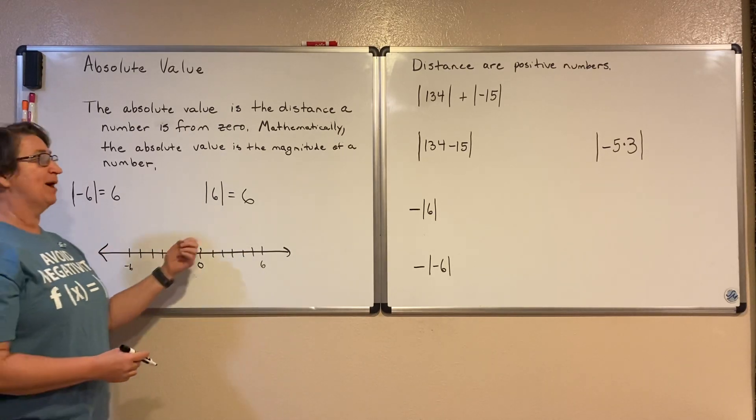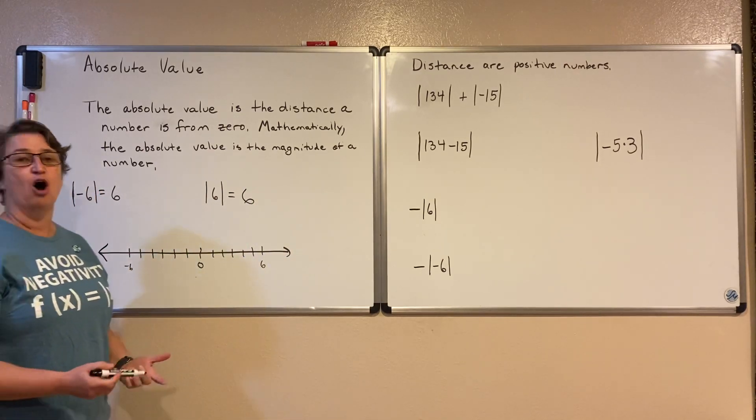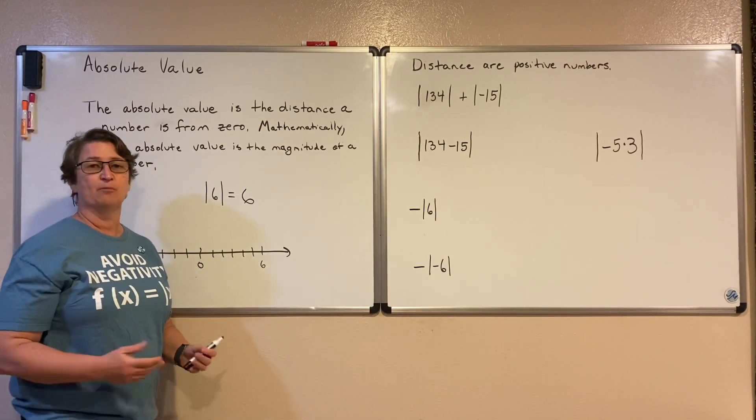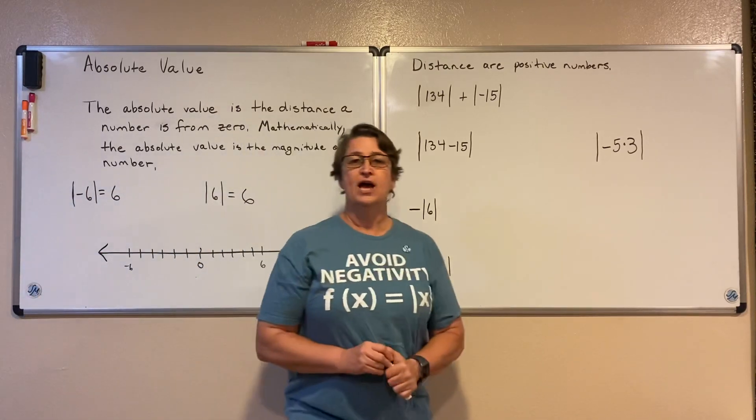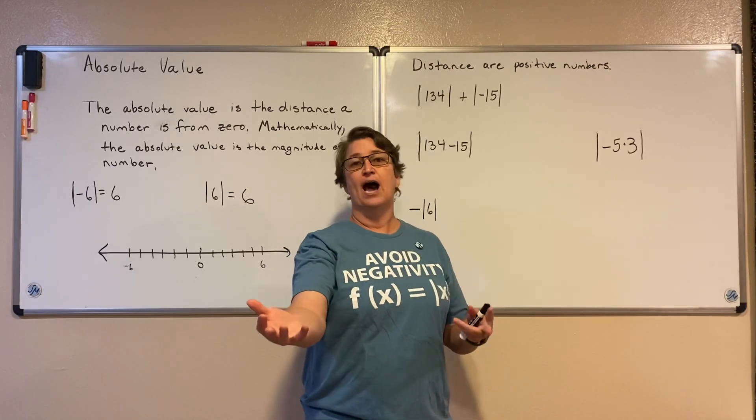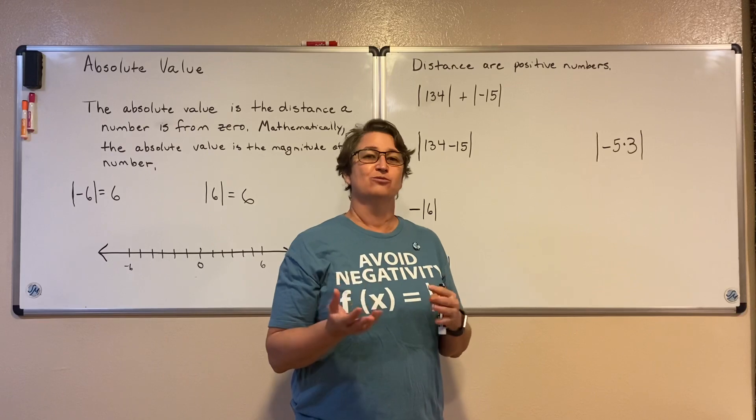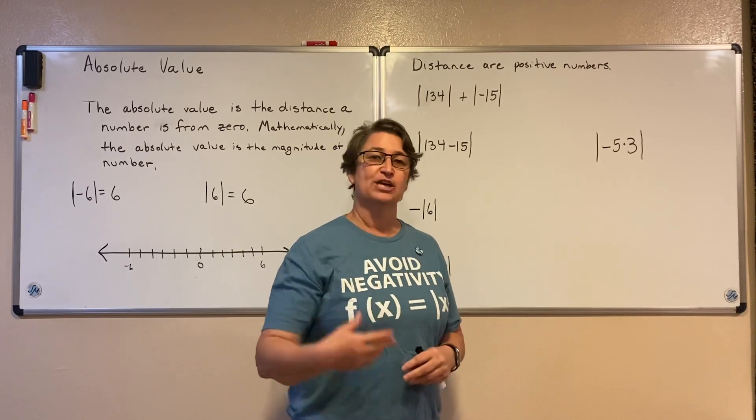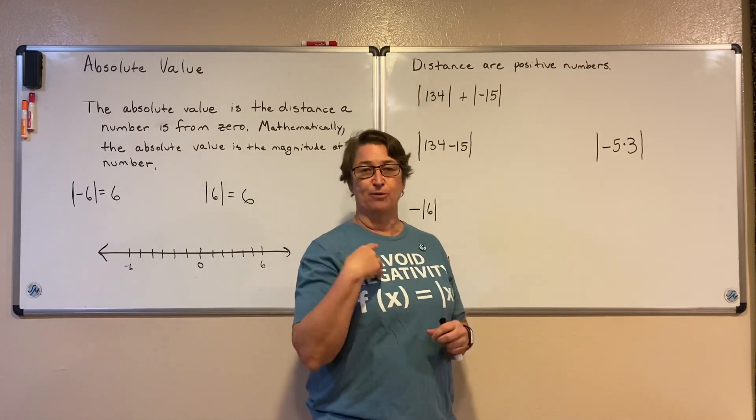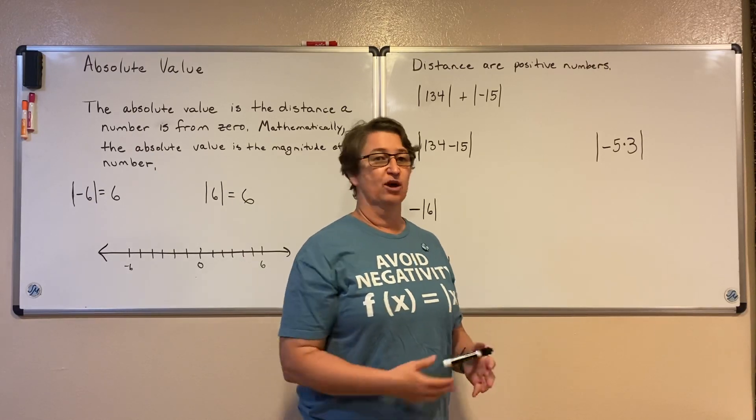If you think about it, distances, the distance to zero is always a positive number. You don't tell someone I'm going to drive 30 minutes to the closest town and then I'm going to drive a negative 30 miles back. That's silly. Instead we say we're going to drive 30 miles there and 30 miles back, and that's because distances are positive numbers.